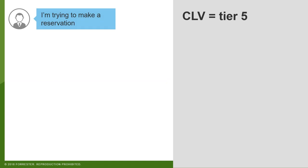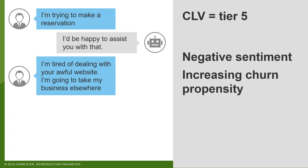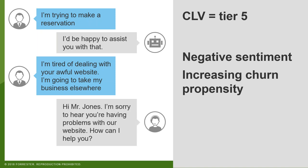Now let's see what happens with a lower-value customer who falls into the lowest tier of lifetime value. Same scenario — trying to make a reservation — but instead of being directed to a human, they're directed to a chatbot, a less costly customer service solution. The customer says, 'I'm tired of dealing with your awful website, I'm going to take my business elsewhere.' Text analytics picks up on the negative sentiment and churn risk, so based on business rules, the conversation gets routed to a human agent who can resolve the problem and try to rectify the relationship.